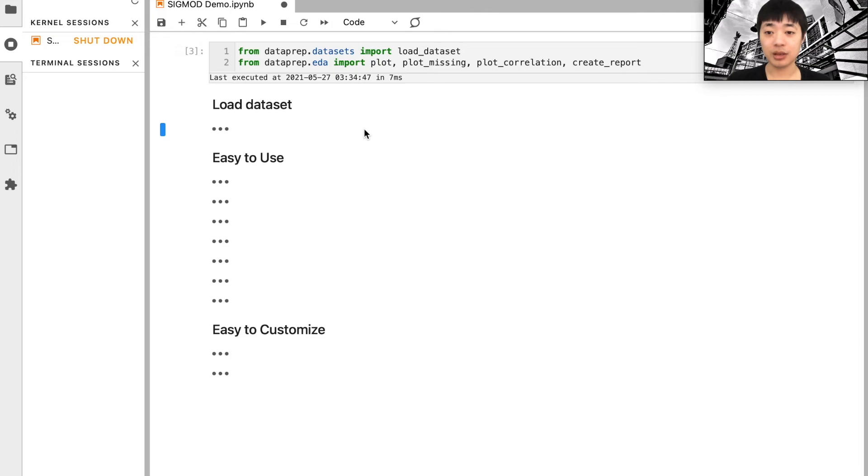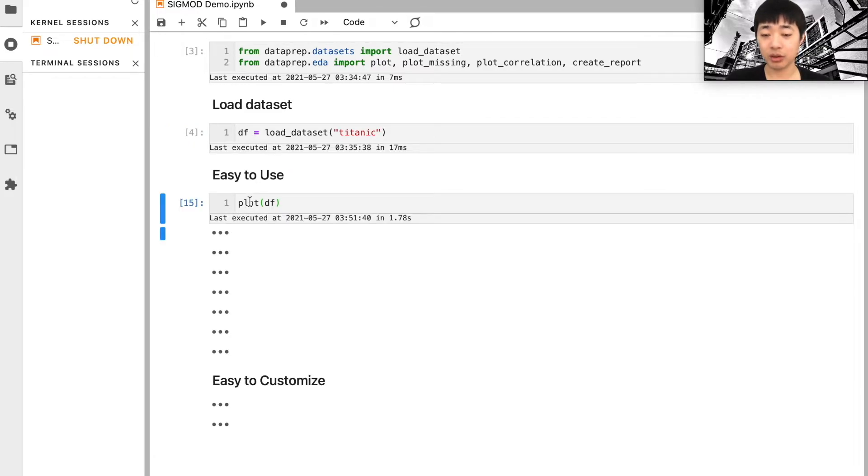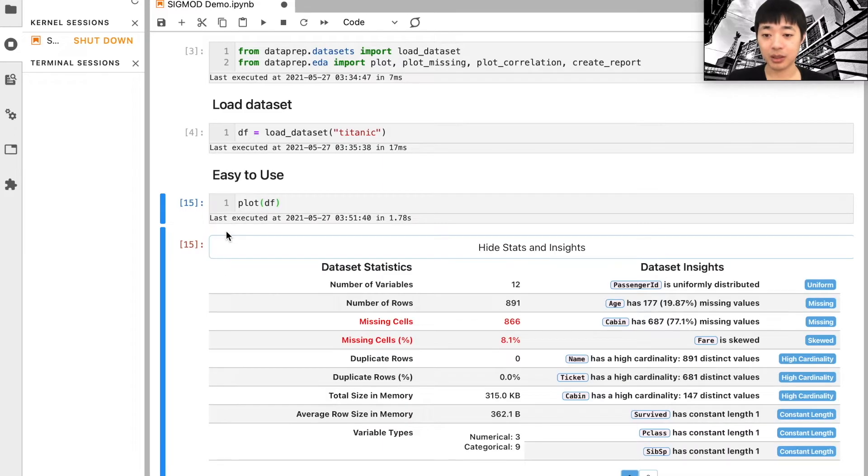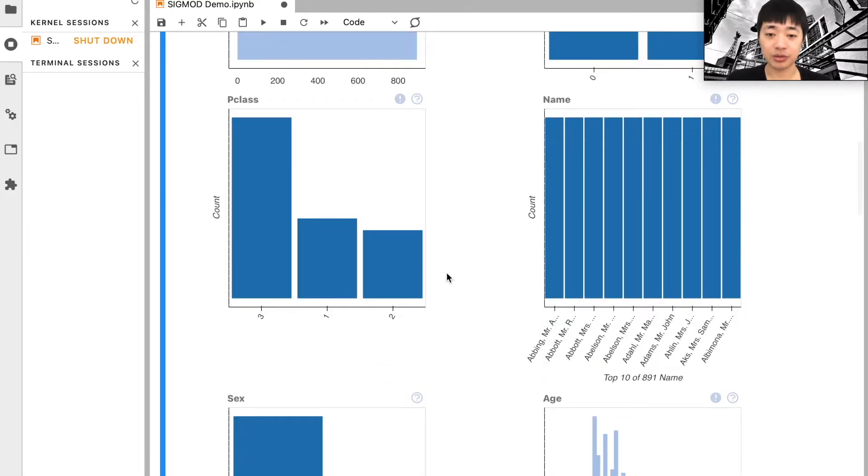Hi, in this demo, I'm going to show you dataprep.eda is not only easy to use, but also easy to customize. First, I'm going to load the dataset into a pandas dataframe. Next, I'm going to use one line of code, which uses the plot function to plot the dataframe. It will display a bunch of statistics, and also some insights on the dataset, as well as the distributions of each column.